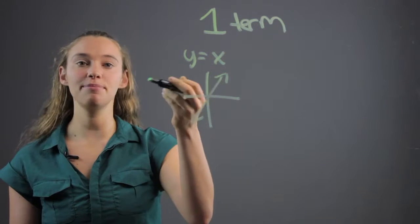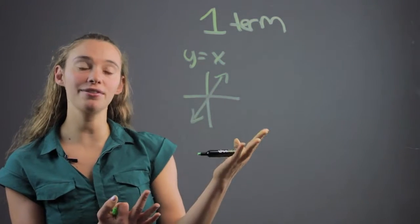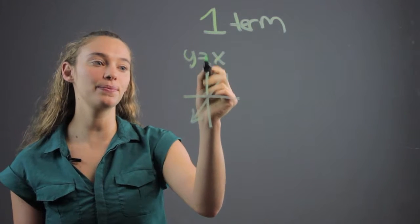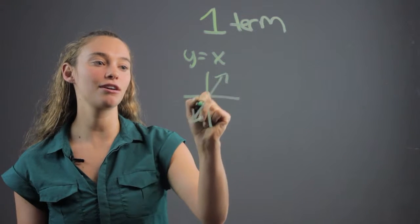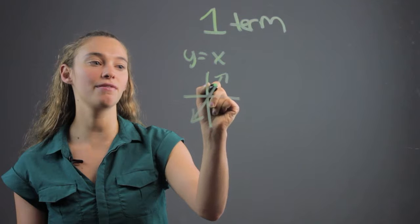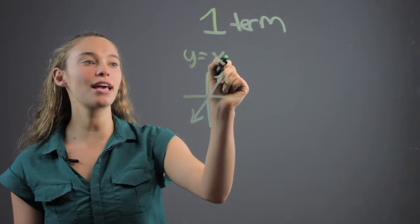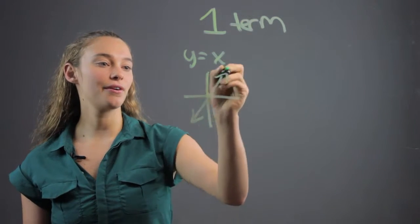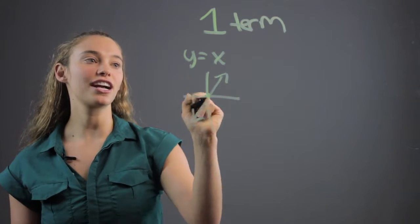You can graph that simply by making a table of values, or you can know that the slope is one. So it's going to have a slope of one, a rise of one over a run of one, and it intercepts the origin. And so you know it's going to look like this in one direction.